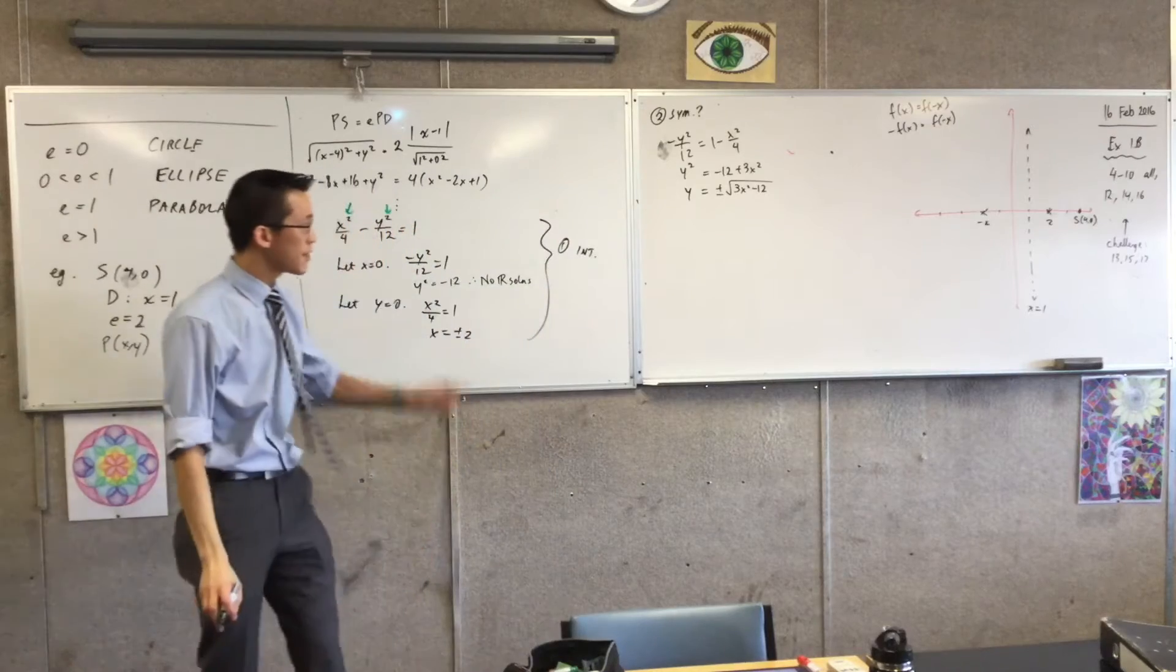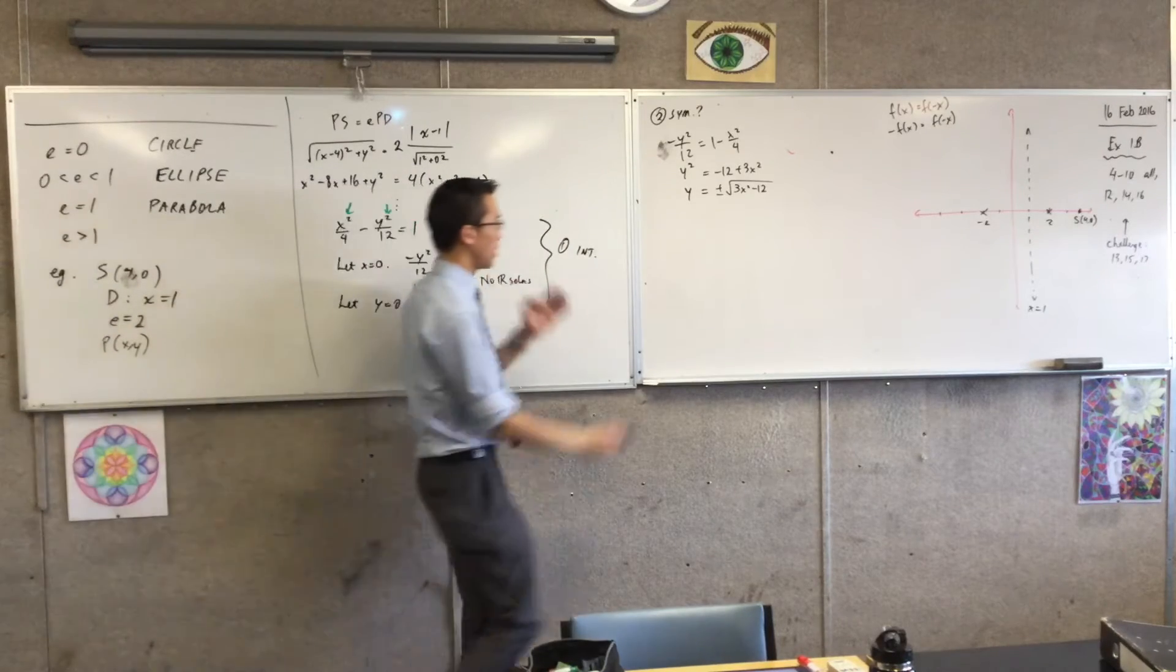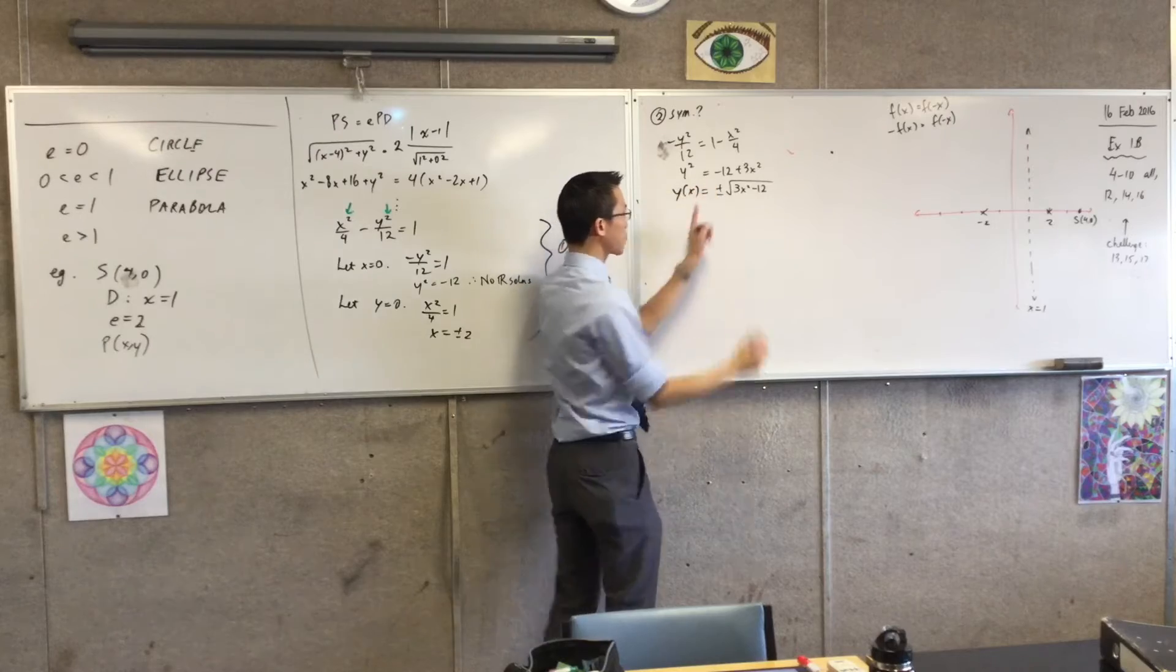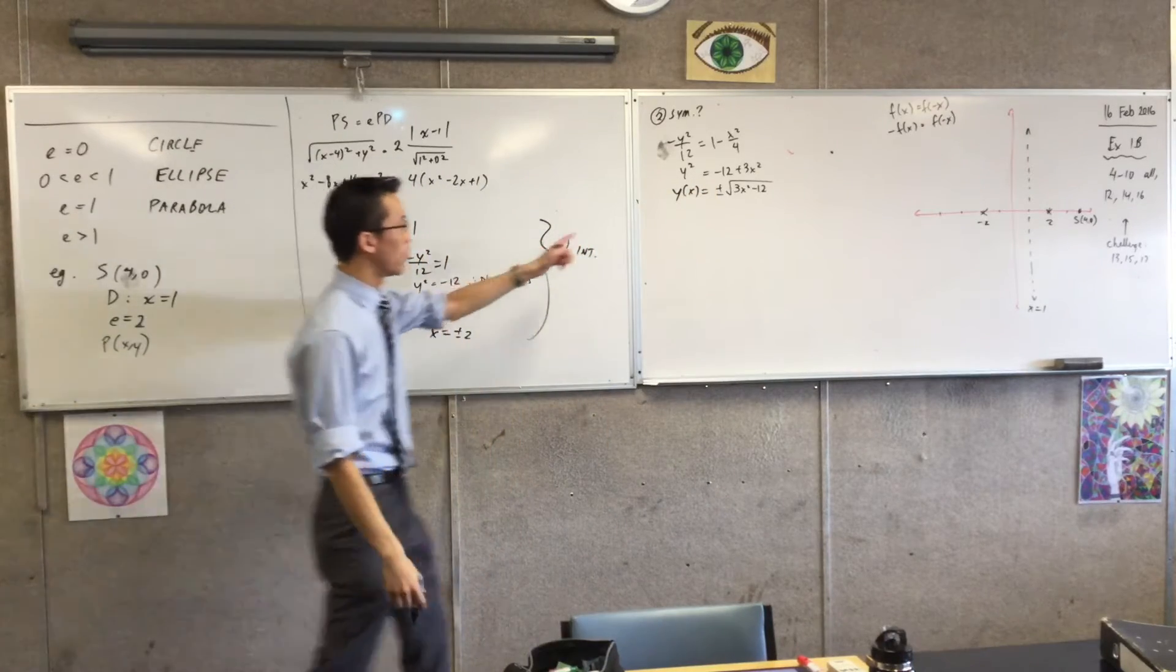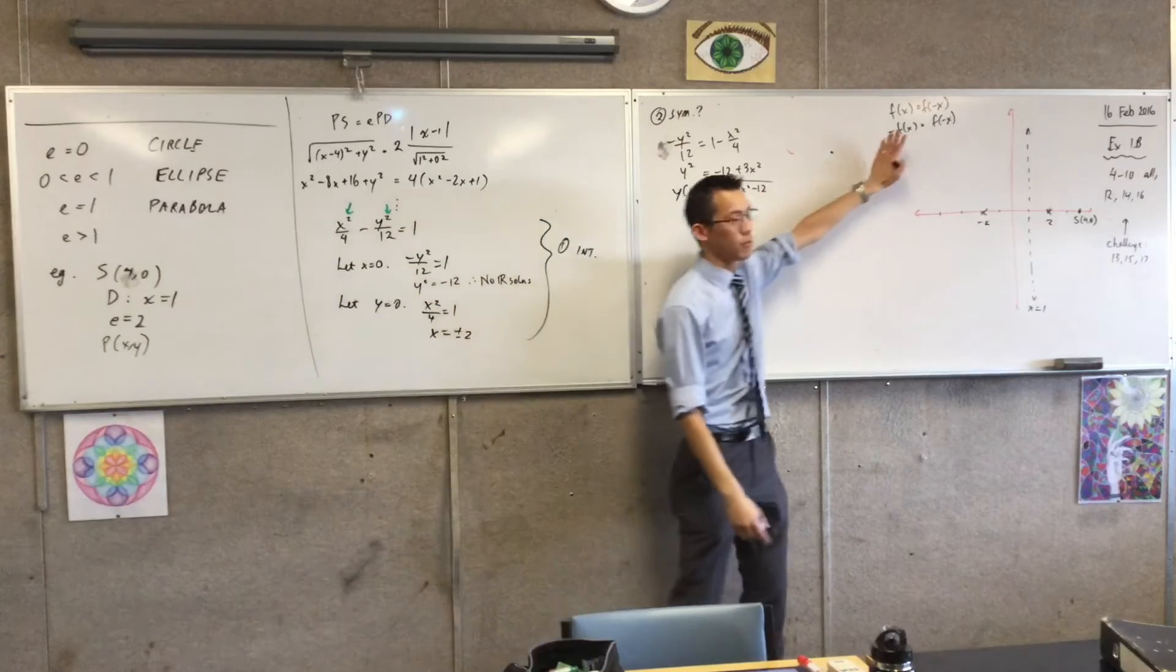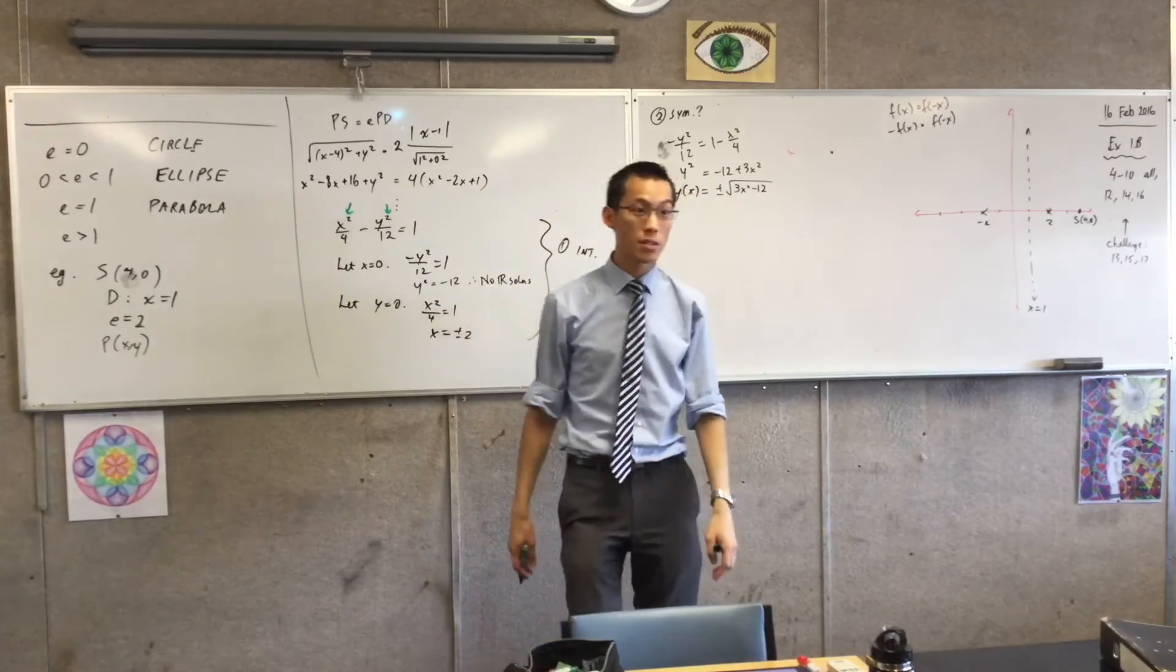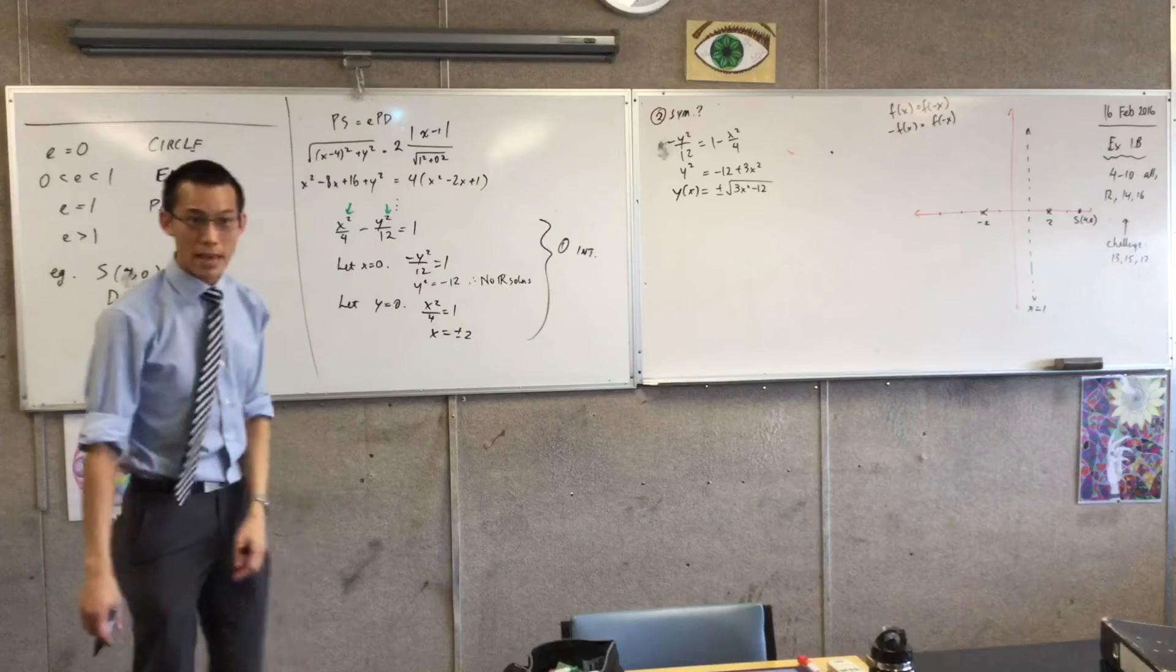Now, pause for a moment. Even though I've written y equals, this is an expression over here that changes. It's in terms of x. So therefore, now I have it in this kind of form. Do I observe any kind of symmetry? Yes. You bet I do.